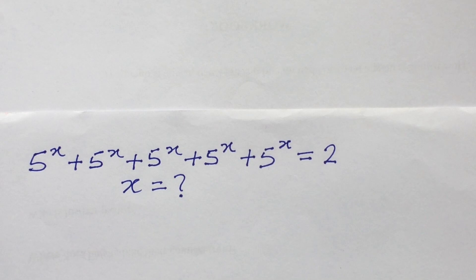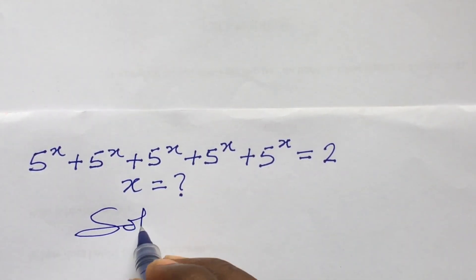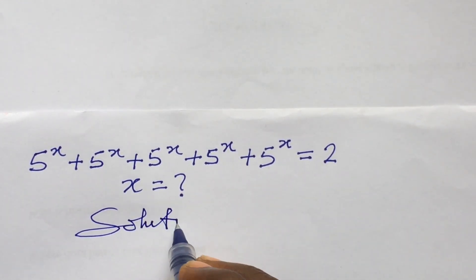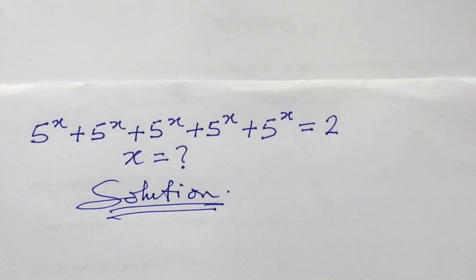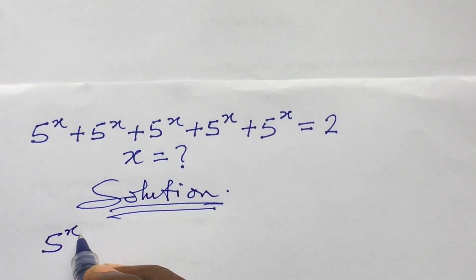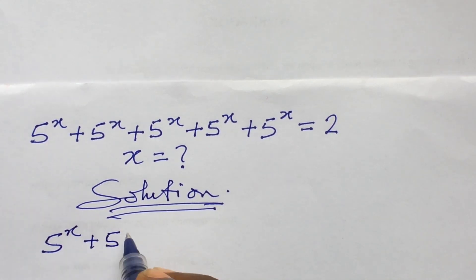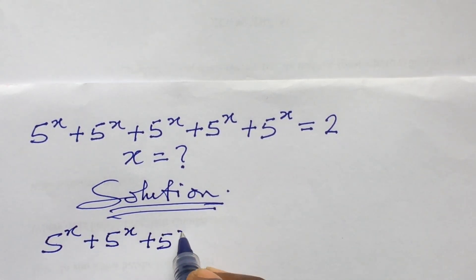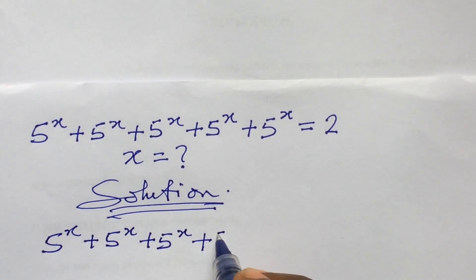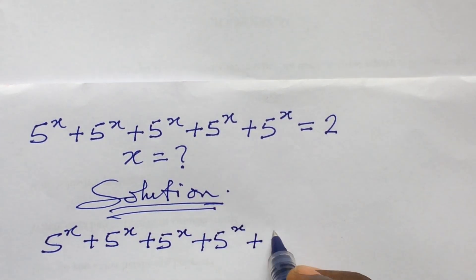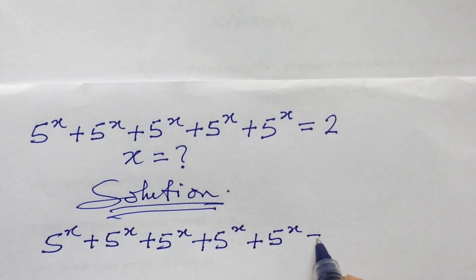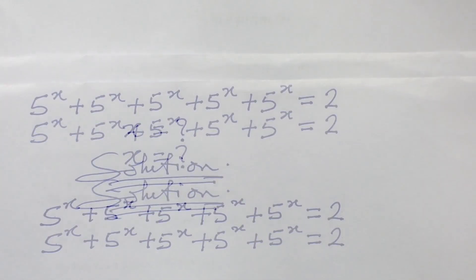Let's put down our question first and then take a solution. The question is: 5 to the power of x, plus 5 to the power of x, plus 5 to the power of x, plus 5 to the power of x, plus 5 to the power of x, all equal to 2.